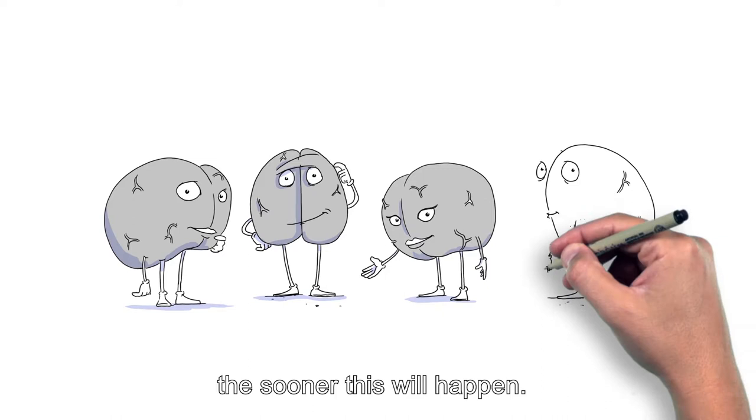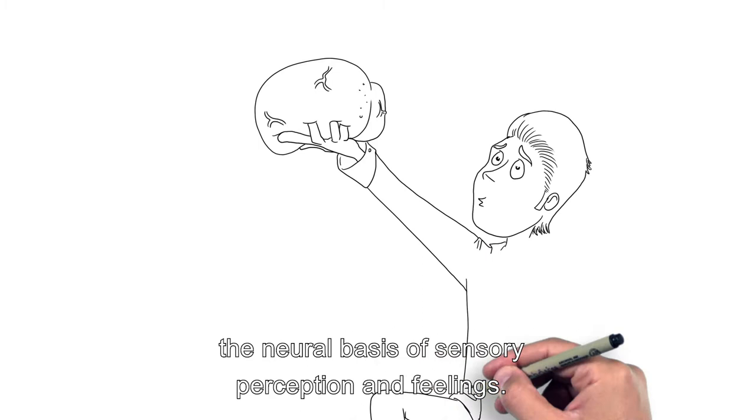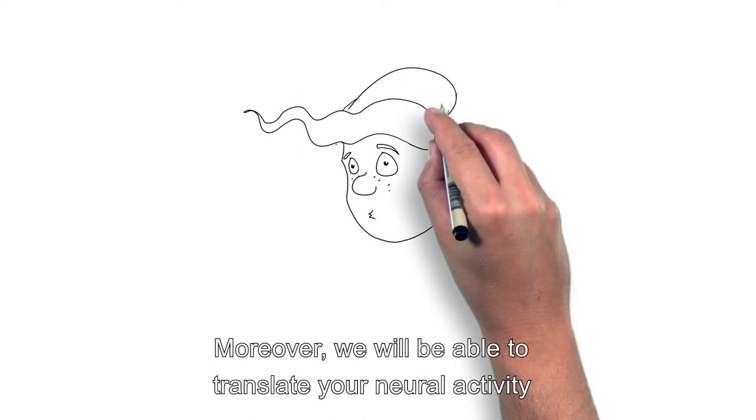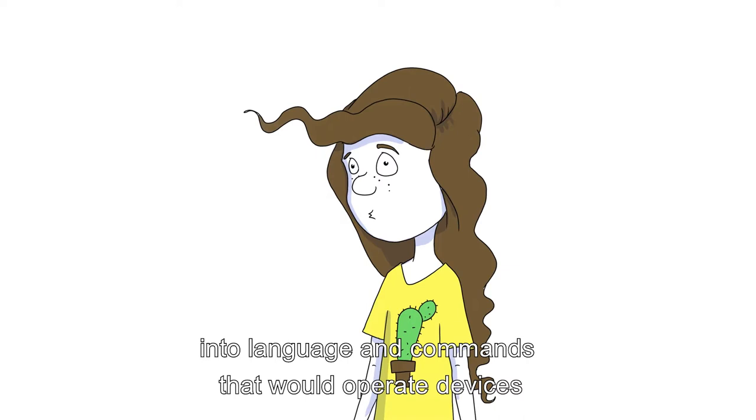Additional scientific research will help us understand the neural basis of sensory perception and feelings. It will enable us to offer new solutions that would allow disabled people to walk. Moreover, we will be able to translate your neural activity into language and commands that would operate devices in the outside world directly from your brain.